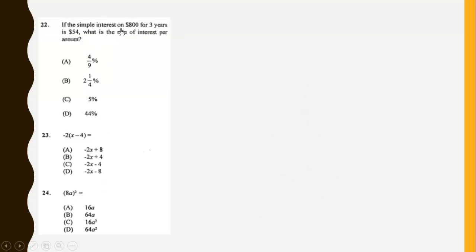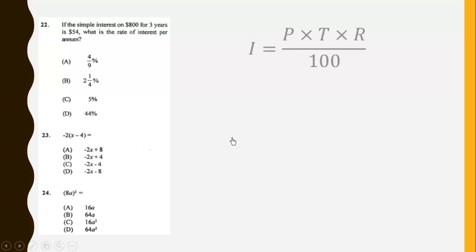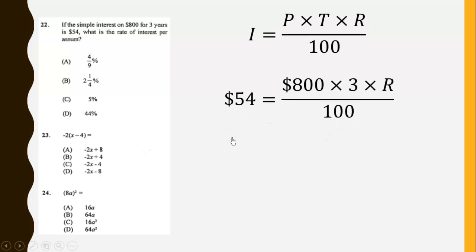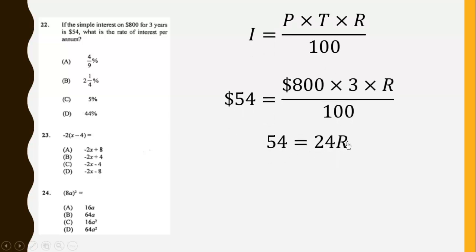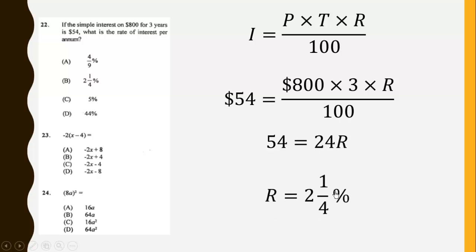If the simple interest on $800 for 3 years is $54, what is the rate of interest per annum? We substitute into the formula and simplify to get 54 equals 24R, then we get our rate to be 2 and one quarter percent.